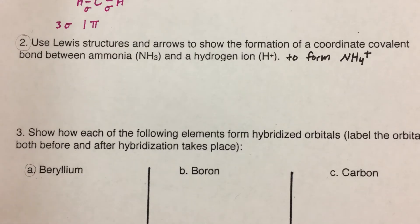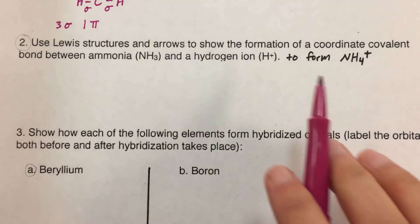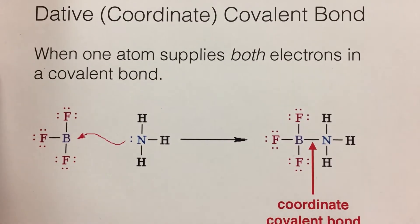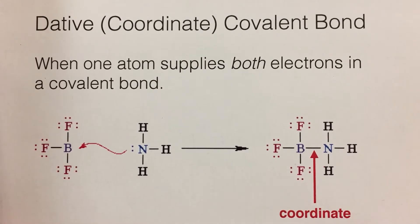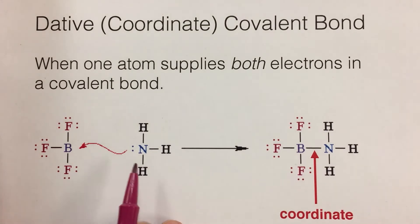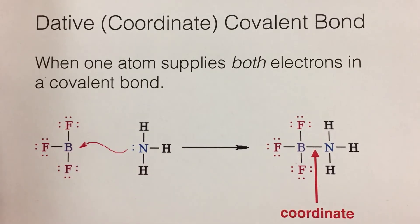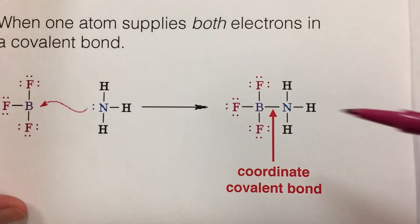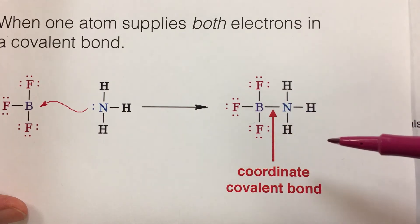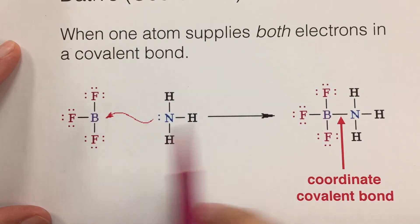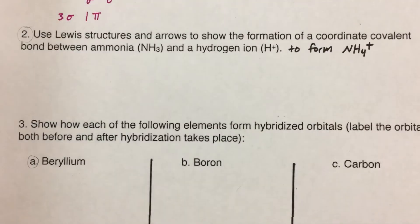Also a topic from the notes — the question says to use Lewis structures and arrows to show the formation of a coordinate covalent bond between ammonia and a hydrogen ion, to form NH₄⁺. A coordinate covalent bond means one atom supplies both electrons to form the bond. In the class example, the nitrogen in ammonia had a lone pair it used to attach and make a bond to boron. The electrons in that new bond both came from nitrogen, making it a coordinate covalent bond.